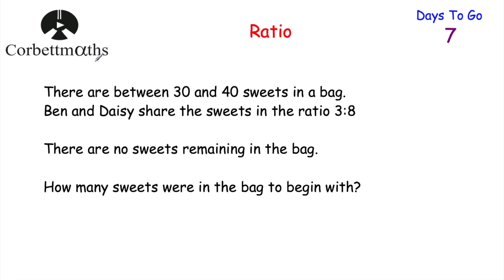Let's have a look at our next question. There are between 30 and 40 sweets in a bag. Ben and Daisy share the sweets in the ratio 3 to 8, and there are no sweets remaining after they've shared them out. The question asks: how many sweets were there in the bag to begin with? Press pause and work this out now.